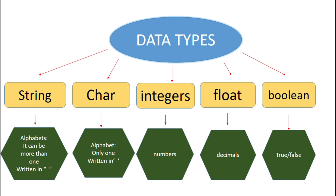The next is a character, written as 'char'. A single alphabet, whether lowercase or uppercase, is considered a character. Characters are written inside single quotes. The next one is integers, written as 'int' — all positive and negative numbers are integers. Floats are all decimals such as 0.1 or 0.2.